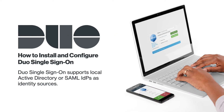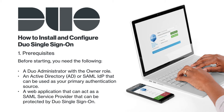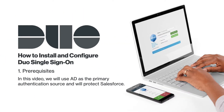Duo Single Sign-On supports local Active Directory or SAML IDPs as identity sources. Before you set up Duo Single Sign-On, note that you will need the following: a Duo Administrator with the Owner role, an Active Directory (also known as AD) or SAML IDP that can be used as your primary authentication source, and a web application that can act as a SAML service provider to be protected by Duo Single Sign-On. In this video, we will use AD as the primary authentication source and will protect Salesforce.